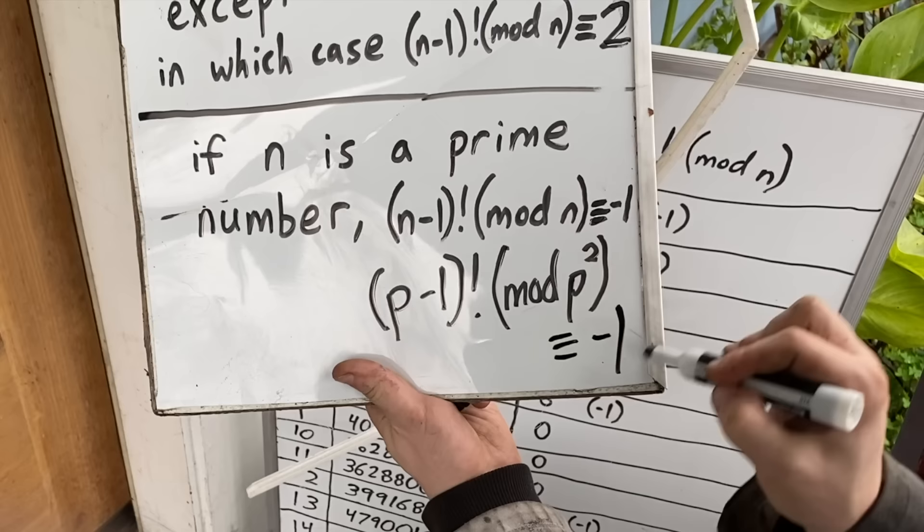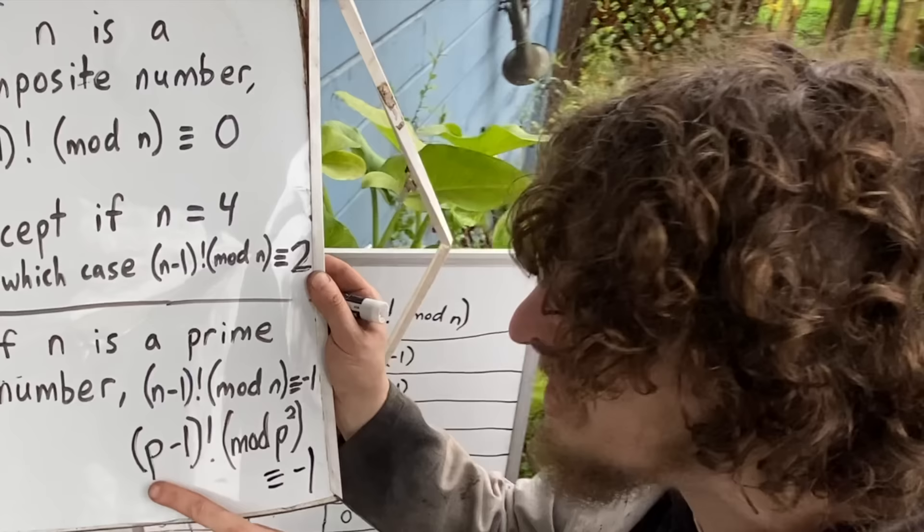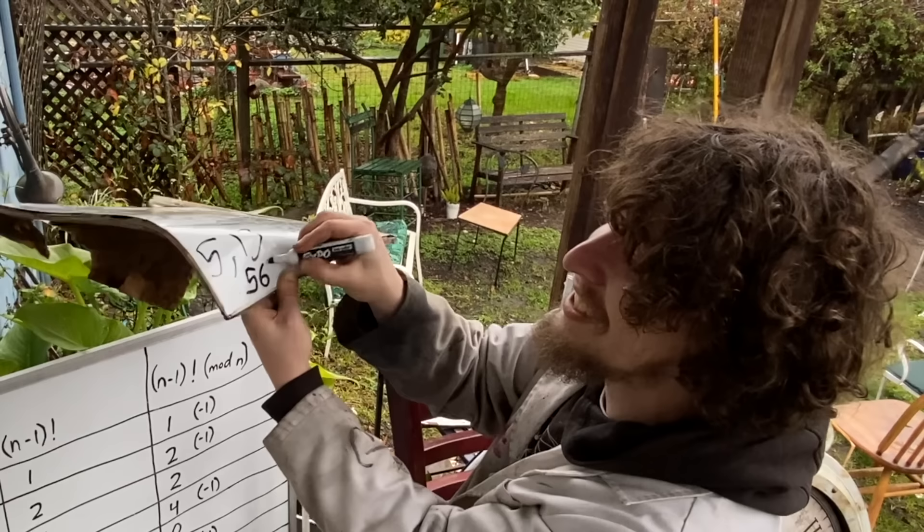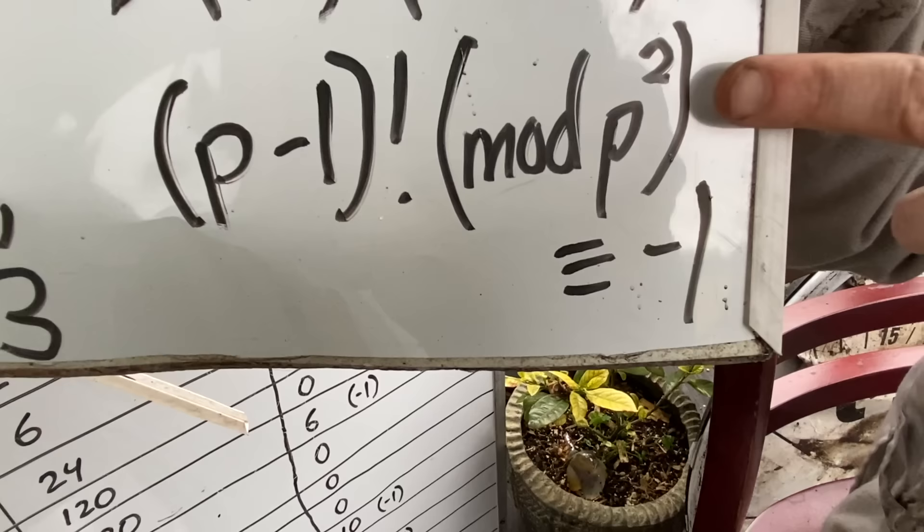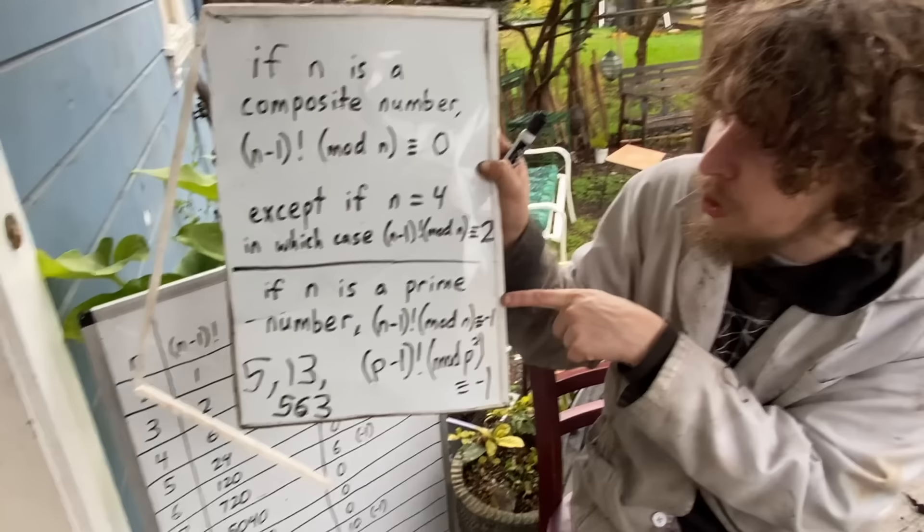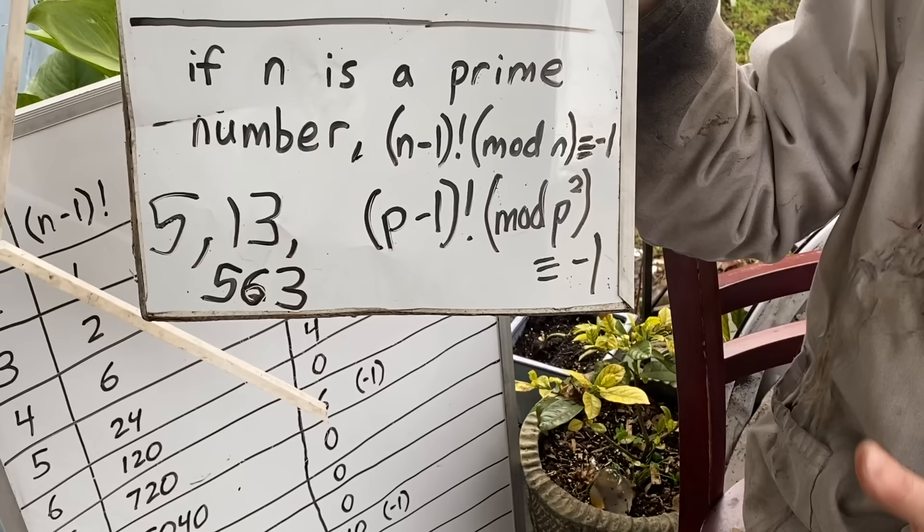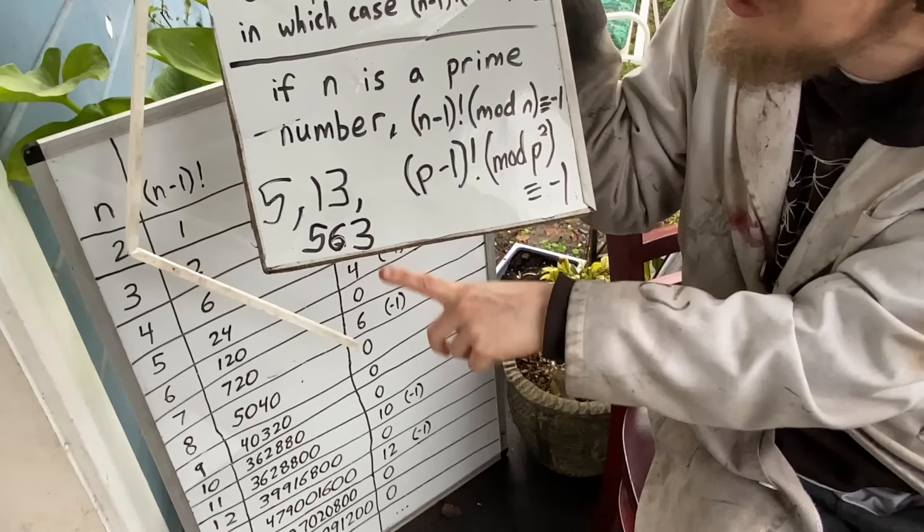Well there are three primes discovered with this property, that 5, 13, and 563 that I showed earlier. This type of prime number is known as a Wilson prime, because it's like it follows a next level version of the congruence that was known as Wilson's theorem that holds true for all prime numbers. And although these Wilson primes that follow that congruence too are very rare, these are the only three discovered by humanity and more than a trillion numbers have been checked, it is conjectured that there's likely to be an infinite amount of them, just really rare.